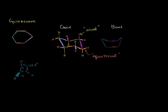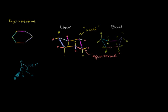The axials are the ones that point straight up and straight down. We could do the same analysis on a boat configuration. Both the chair and boat configurations result in tetrahedral-type shapes at each of the carbons — you have the tripod at every carbon in either configuration, with axial and equatorial hydrogens present. So you can draw the tripod shapes in either the chair or boat configuration.